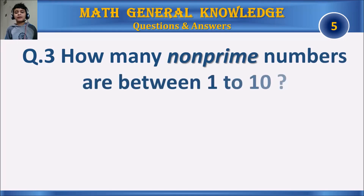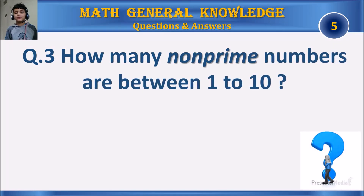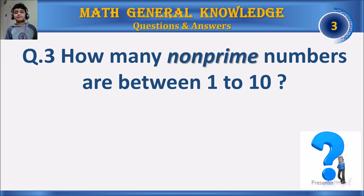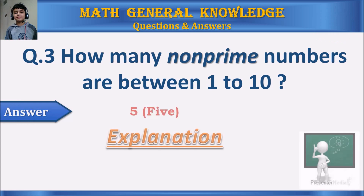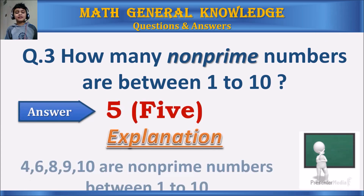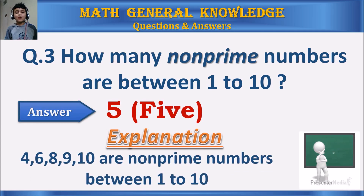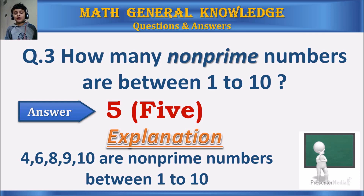Question 3: How many non-prime numbers are there between 1 to 10? Your time starts. The answer is 5. The numbers 4, 6, 8, 9, and 10 are non-prime numbers between 1 to 10.